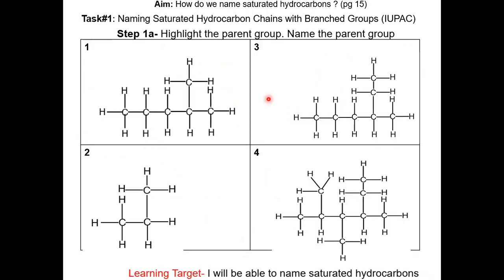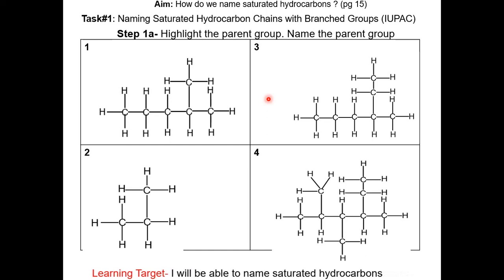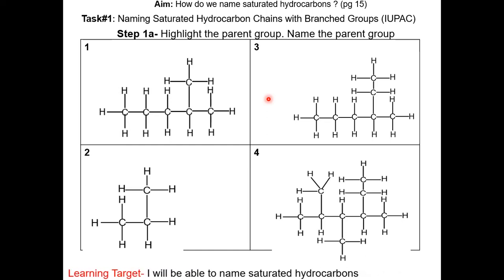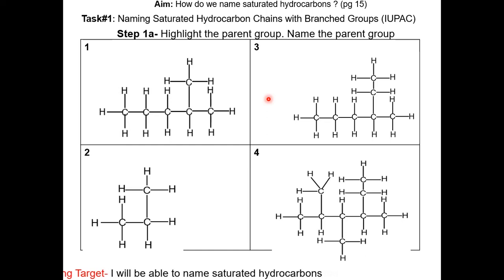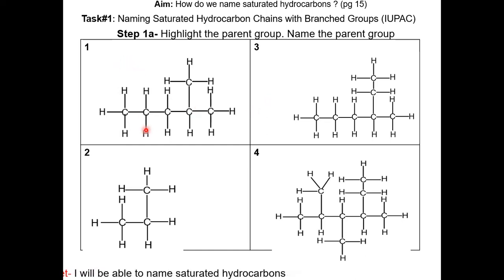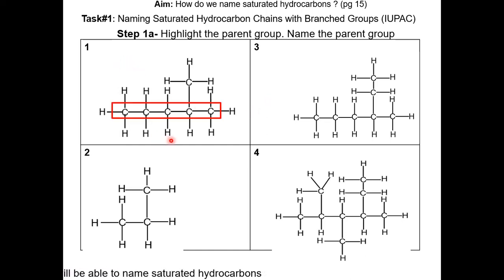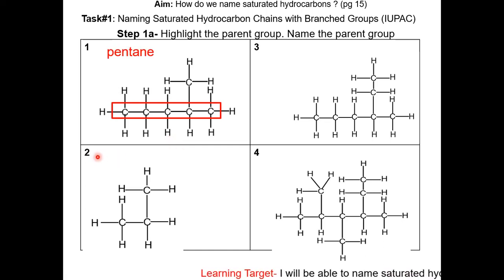On the next page of your packet, take a moment to highlight the parent group in these 4 molecules. Once you've done it, resume this video. Here are the answers. For question 1, the parent group contains 5 carbons, so the name of this parent group is pentane.